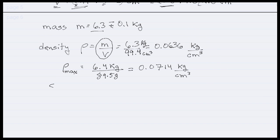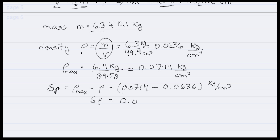Now, we can compute the error delta rho, which is rho max minus rho, and that's our 0.0714 minus 0.0636, and that has units of kilograms per centimeters cubed. And when we plug those numbers in our calculator, let's calculate it. It's 0.0714 minus 0.0636, and that is 0.0078.